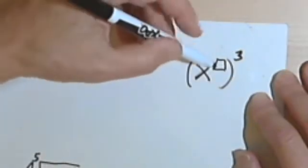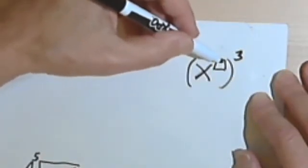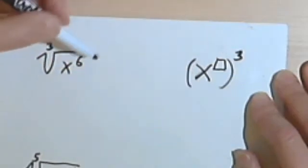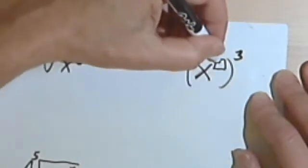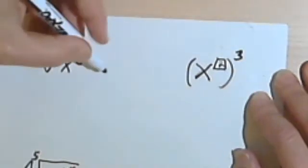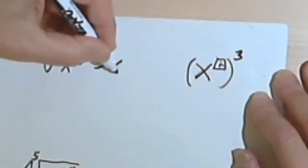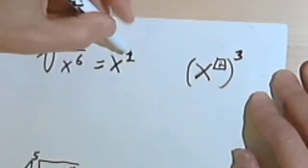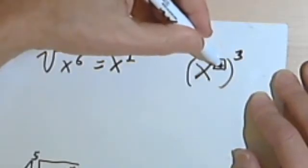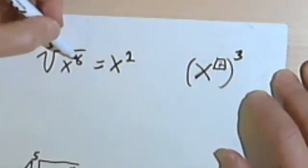So what could I put in this box here to multiply by 3 and get a 6? Well, the answer is going to be a 2. So this is x squared because x squared to the third power is x to the sixth.